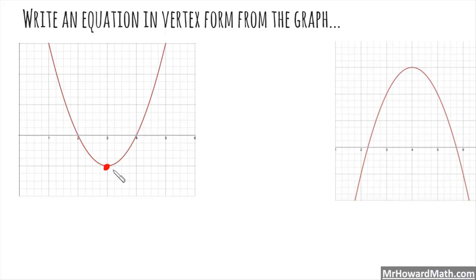So this vertex right here is at 3, negative 1. So 3, negative 1 for the vertex. So this is h, this is k. I get that from the graph right here, 3, negative 1.